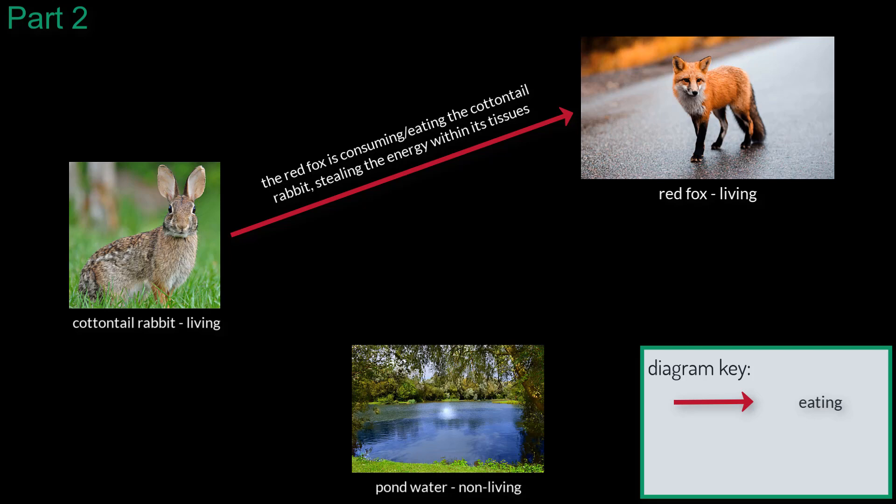Moving now to the interactions between the two organisms and the pond, I know that both the rabbit and fox need to drink water to live, so I am adding a dotted arrow that points from the pond water to each organism, signifying that they are drinking from the pond.